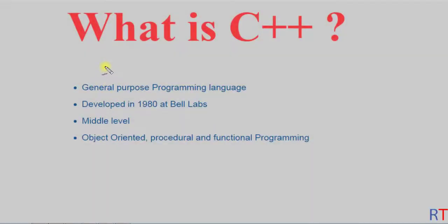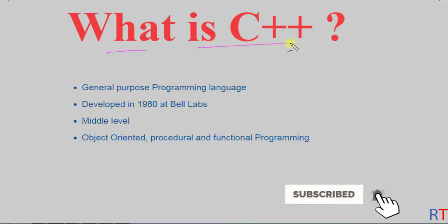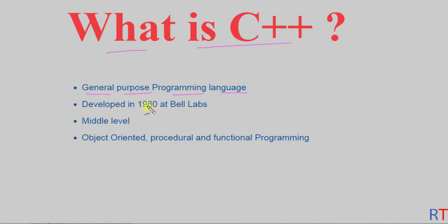In this C++ learning series, in the first video we're going to talk about what C++ is. C++ is a general-purpose programming language developed in the 1980s at Bell Labs. It is a middle-level programming language in the sense that it has features of both high-level and low-level programming languages.